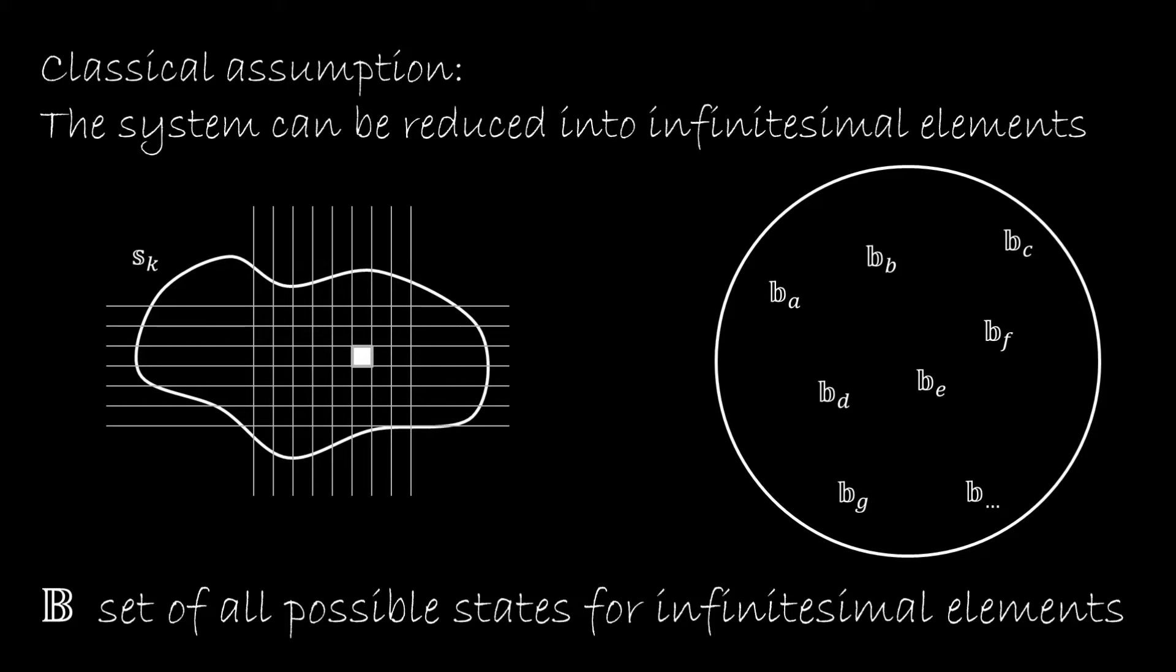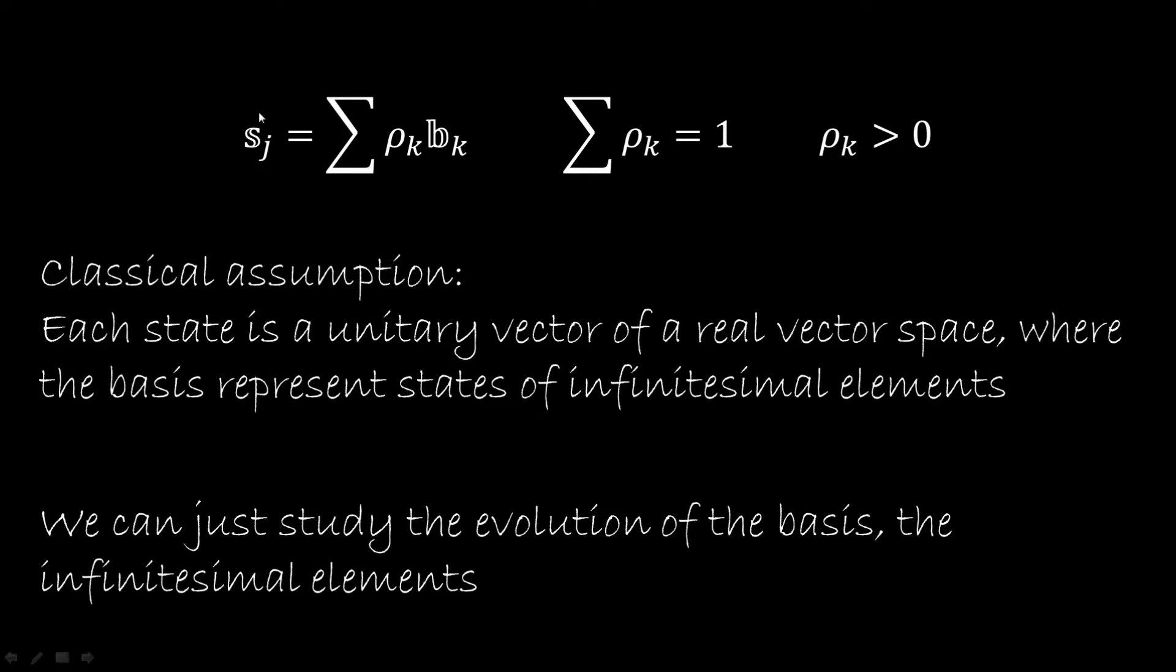So now, because of this assumption, we can construct our set B, which is the set of all the possible states for these infinitesimal elements. And each of them is going to have their own label. Now, with this assumption, we can think of the full state as a distribution on the infinitesimal elements. So we can think that 1% of the whole set is in this particular position and with this particular momentum, this other 1% is in this other position and this other momentum and so on. So the whole state can be seen as a distribution on all the infinitesimal elements. The distribution is going to sum to 1, and each element of the distribution is going to be greater than 0.